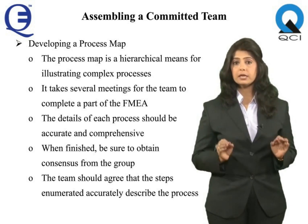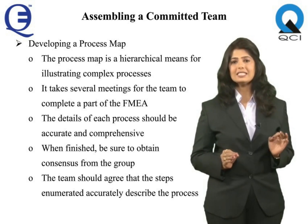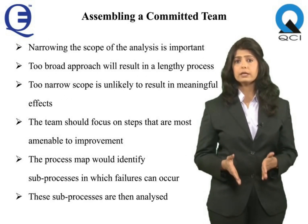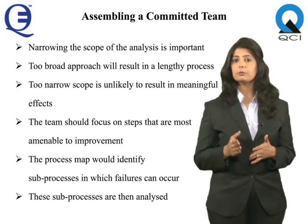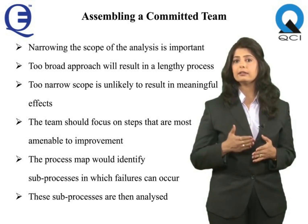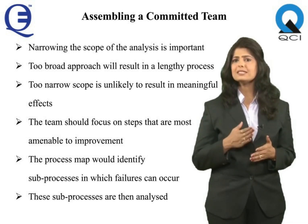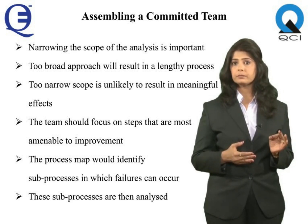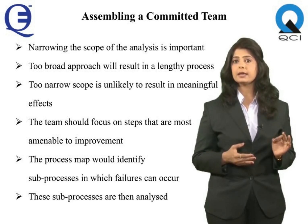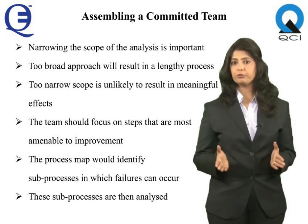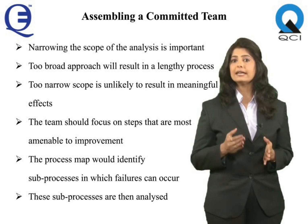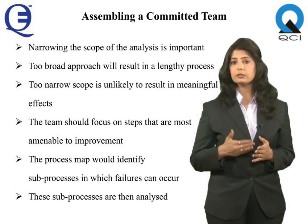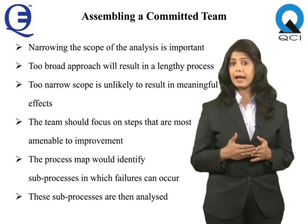When you are finished, be sure to obtain consensus from the group. The team should agree that the steps enumerated in the FMEA accurately describe the process. Narrowing the scope of the analysis is important because too broad an approach will result in a lengthy process, while too narrow a scope is unlikely to result in meaningful effects. The team should focus on those steps most amenable to intervention and improvement. The process map would identify sub-processes in which failures can occur, and these sub-processes are then analyzed to determine which are most likely to have an impact on patient outcomes.